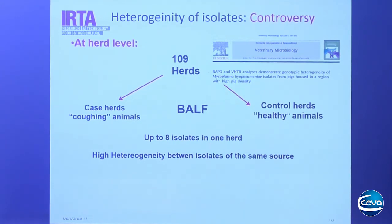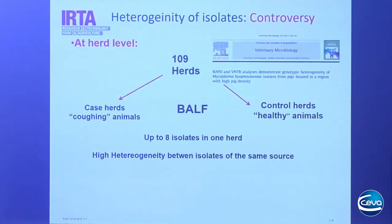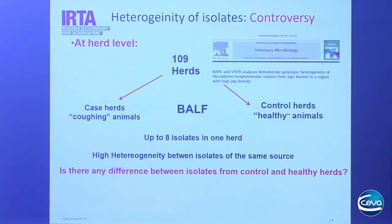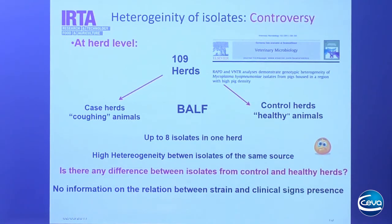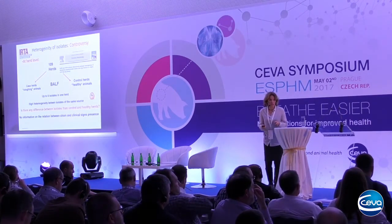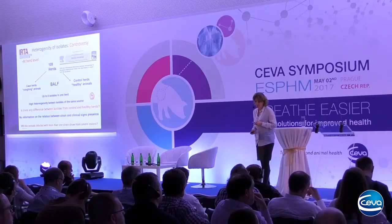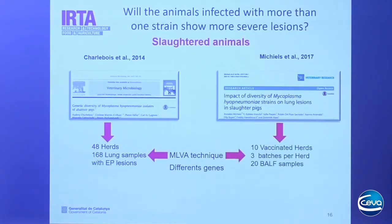However, this result contradicts other published studies — for example, a larger epidemiological study in which 109 herds were tested. These herds were classified into two categories depending on the presence of coughing animals: case herds and control herds. In this study, up to eight isolates were detected per herd, and more than one strain per animal — three strains in one animal. The conclusion was that heterogeneity was high. But the most important missing information is whether there is any difference between the strains detected in coughing herds versus control herds — this is unfortunately not mentioned.